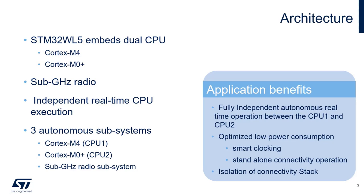WL embeds a dual CPU: Cortex-M4 and Cortex-M0+. It is important to remember that Cortex-M4 is more the application MCU and the associated number is 1 — so CPU1 means Cortex-M4, and Cortex-M0+ is CPU2. CPU2 is more related to the security area. Cortex-M4, M0, and radio can operate in an independent way.